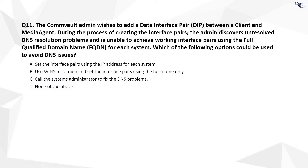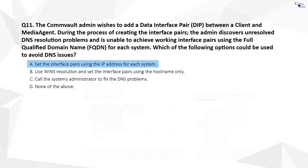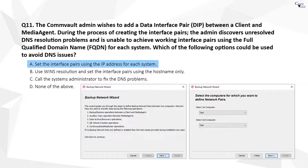Question 11. The correct answer is A. Data interface pairs, now called backup networks, are used to specify a source and destination network interface for two CommCell resources, such as a client and media agent, to communicate through. DIPs can be configured using host names or IP addresses. In this case, using an IP address will avoid DNS lookup issues.